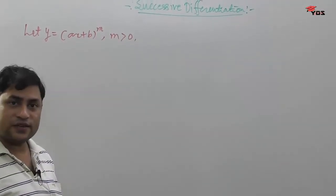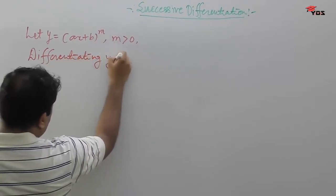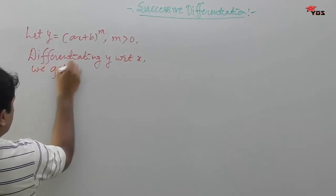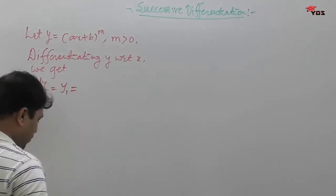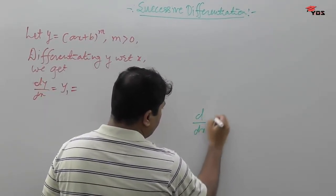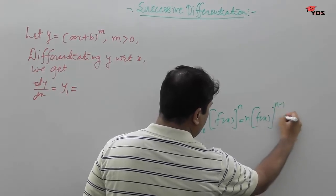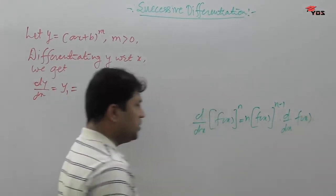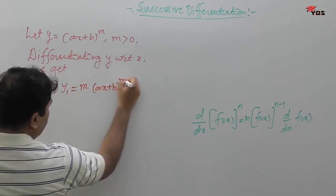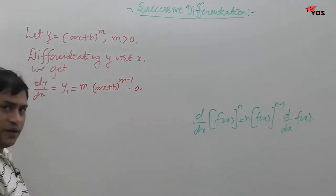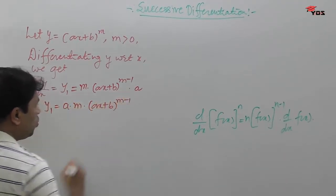If we want to find the nth derivative of this function, we differentiate y with respect to x. Using the formula d/dx of [f(x)]^n = n·[f(x)]^(n-1)·f'(x), the first derivative y1 = a·m·(ax + b)^(m-1).